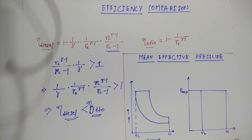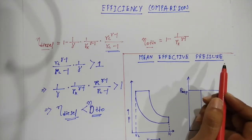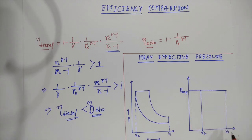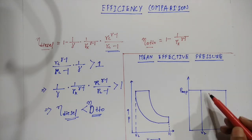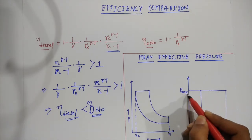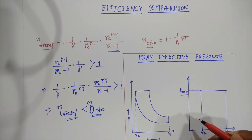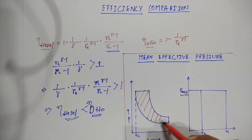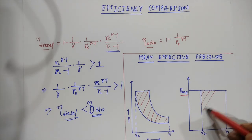Now the final topic is mean effective pressure. The mean effective pressure is defined as: if the PV curve of the diesel cycle is transferred into another curve with a constant pressure line, keeping the initial and final volume the same as the previous PV curve, the pressure obtained from this new curve is known as the mean effective pressure.